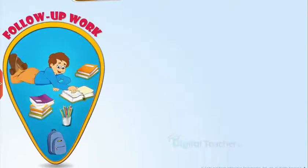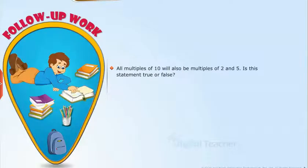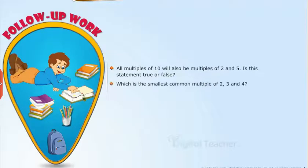Follow-up work: All multiples of 10 will also be multiples of 2 and 5 — is this statement true or false? Which is the smallest common multiple of 2, 3, and 4?